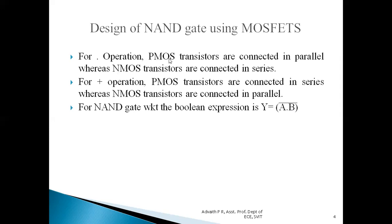The reason PMOS transistors form the pull-up network is that through these PMOS transistors, the output is pulled to a higher logic level, hence the name pull-up network. Whereas NMOS transistors, when they turn on, always try to pull the output voltage down to logic level zero, hence NMOS transistors form the pull-down network.